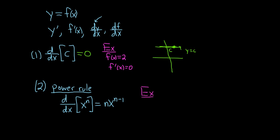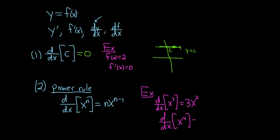Let's do a simple example. The derivative with respect to x of x cubed: you put the three in the front, so you get 3x, then subtract one — three minus one is two — giving 3x squared. Another one: d/dx of x to the fourth. You put the four in front, subtract one, and get 4x cubed. That's the power rule — put the number in the front and subtract one.